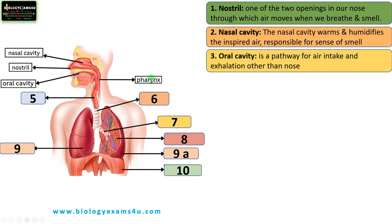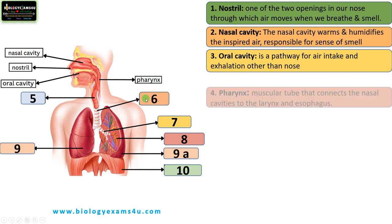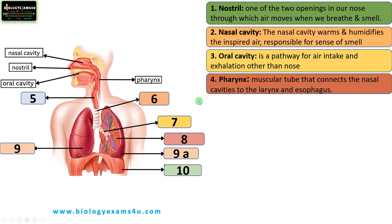The next structure is the throat or pharynx. It is a muscular tube that connects the nasal cavity to the larynx and esophagus, and is involved in both the digestive system and respiratory system. It serves as a common pathway for the movement of air and food.